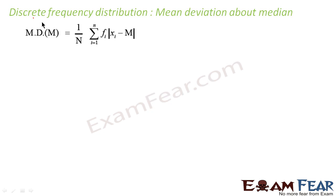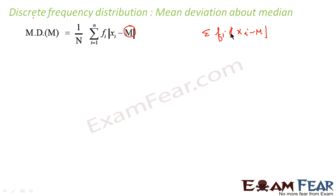In case we have to find mean deviation about median for a discrete frequency distribution, the first thing we have to do is find the median. Once we have the median, we can use the same formula: sigma fi times |xi minus M| — that is, the distance of all these points from M — divided by n.